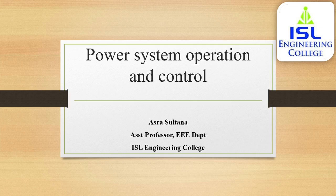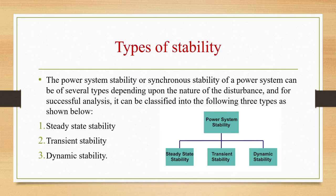Before seeing the power angle curve, we will review the topics discussed in previous classes. We discussed what is stability and the different types of stability. Power system stability is the ability of the system to come back to its normal stable operation when subjected to certain disturbances. According to the type of disturbance, stability is divided into three types: steady state stability, transient stability, and dynamic stability.